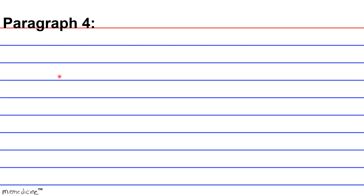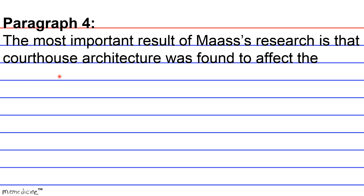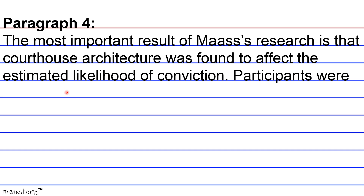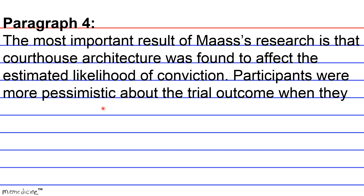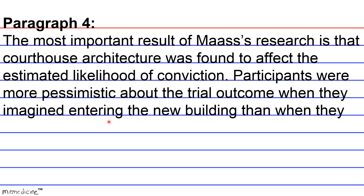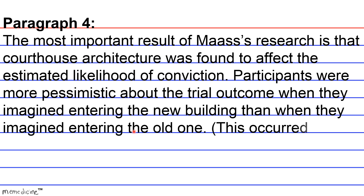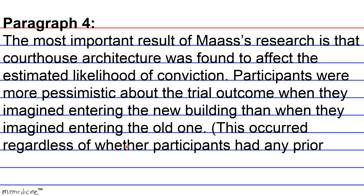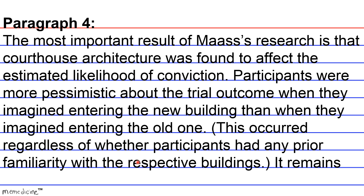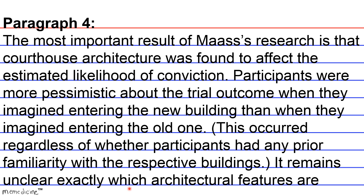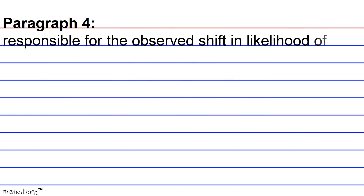Paragraph four: The most important result of Mass's research is that courthouse architecture was found to affect the estimated likelihood of conviction. Participants were more pessimistic about the trial outcome when they imagined entering the new building than when they imagined entering the old one. This occurred regardless of whether participants had prior familiarity with the respective buildings.